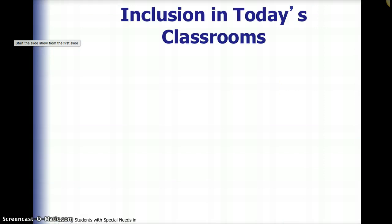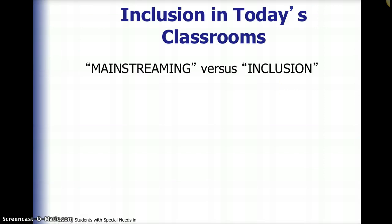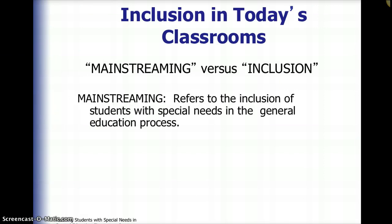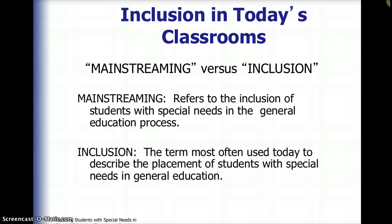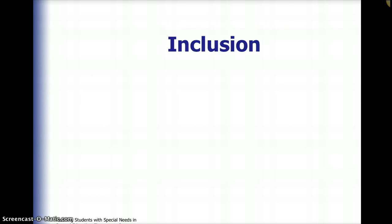So inclusion in today's classroom — looking in your book, you're seeing a couple of names: mainstreaming versus inclusion. Mainstreaming is the inclusion of students with special needs in the general education process, and inclusion is the word most used today to describe how we place students with special needs in general education.